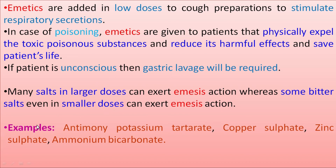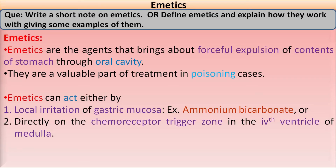Examples of emetic agents are antimony potassium tartrate, copper sulfate, zinc sulfate, and ammonium bicarbonate. These are the agents that bring about forceful expulsion of the contents of the gastrointestinal tract through the oral cavity. Whenever a question is asked in your examination, you should mention the definition, mechanism of action, and examples.